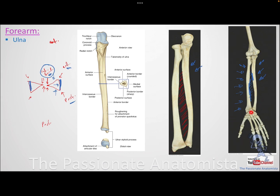The distal end of the radius is broad because it forms the wrist joint. The distal end of the radius articulates with the two proximal carpal bones to form the radiocarpal joint, which we will cover in the wrist joint discussion. We call it radiocarpal because it is predominantly formed between the broad distal end of the radius and the proximal row of carpal bones — carpal bones have a proximal row and a distal row.